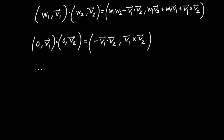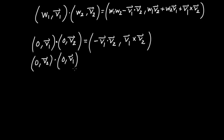Now I hope you remember that quaternion multiplication is not commutative. So what I'm going to do is, instead of multiplying the two quaternions in that order, flip the order: I'm going to take (0, V2) and multiply by (0, V1).